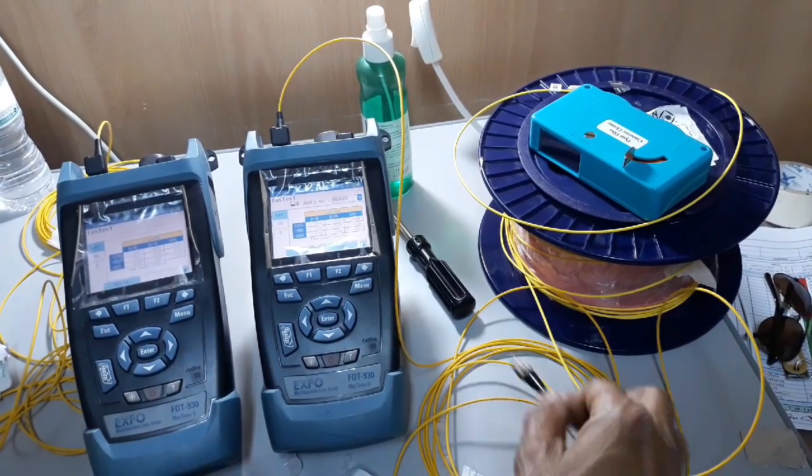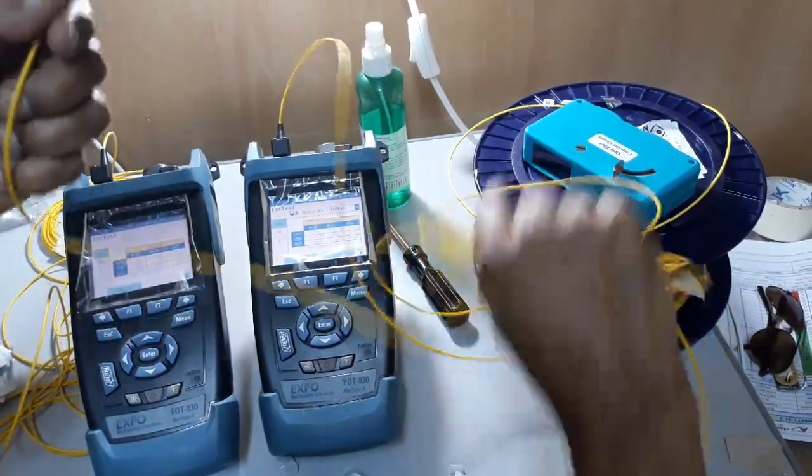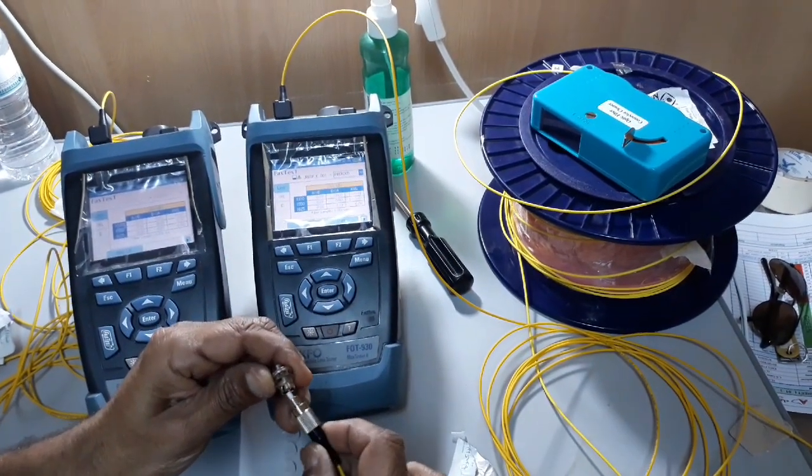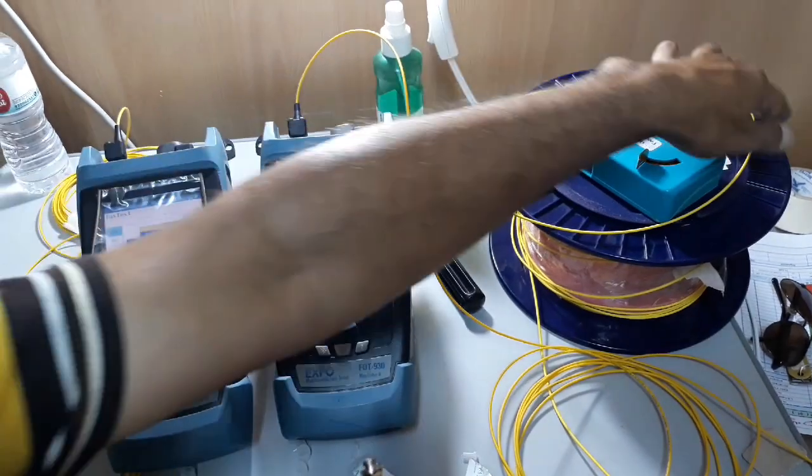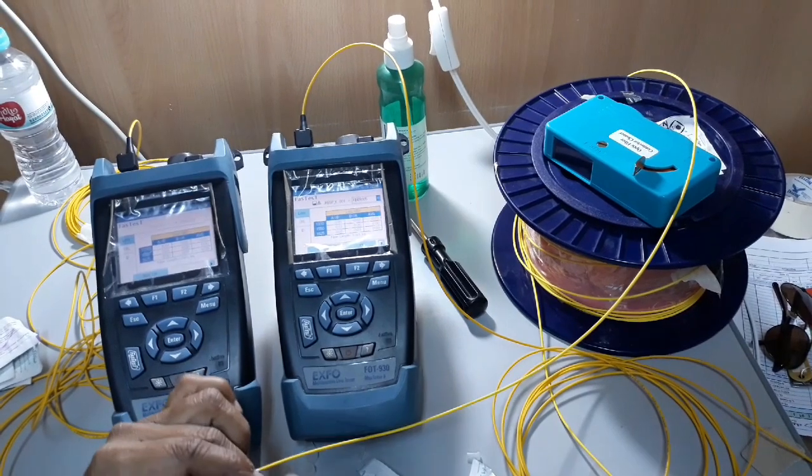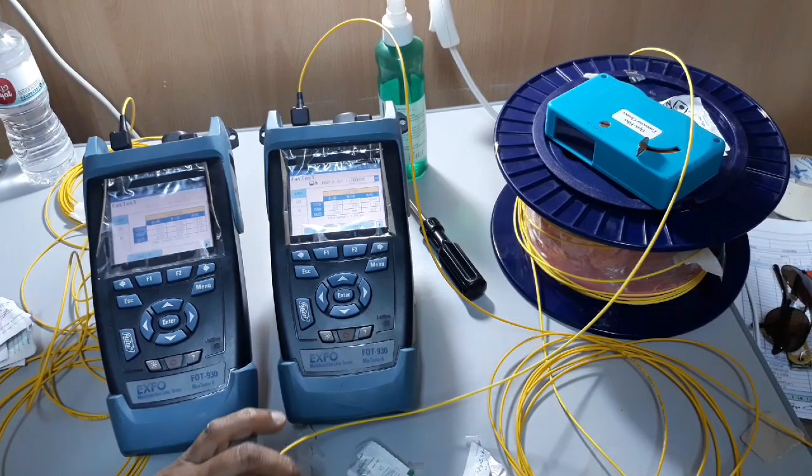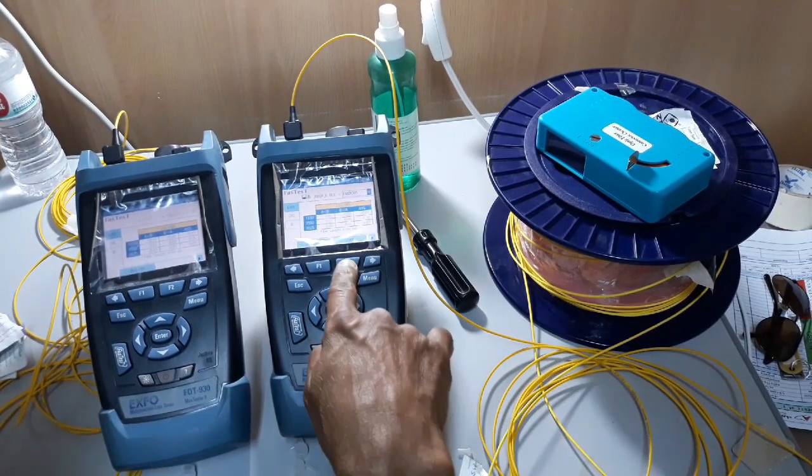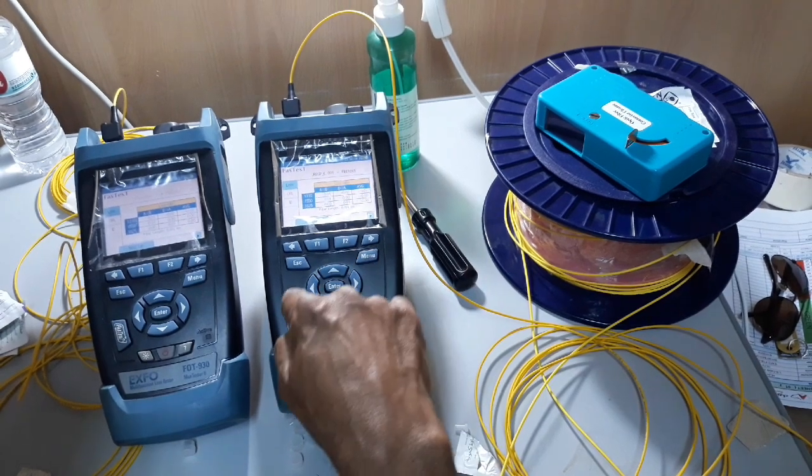So detach the bulkhead connector and connect one end of the connector along with a coupler bulkhead and connect it with the dummy's one end. We should not disconnect or disturb the test jumpers or patch codes from the test port. Connect one end of the dummy with the master and connect the other end of the dummy with the remote.